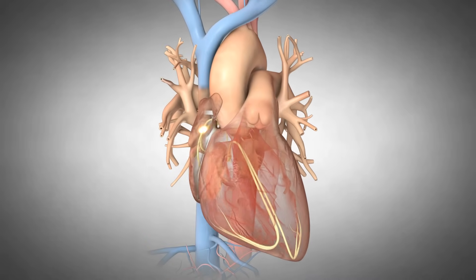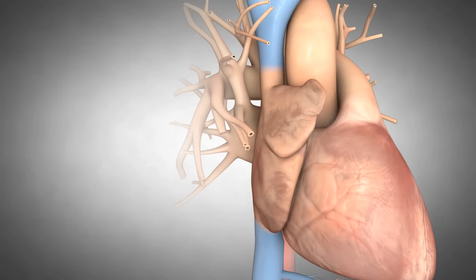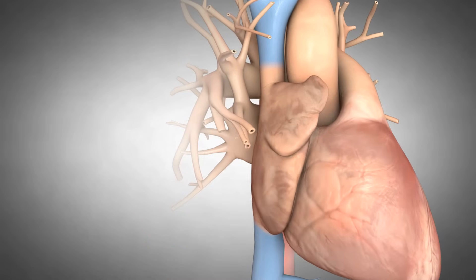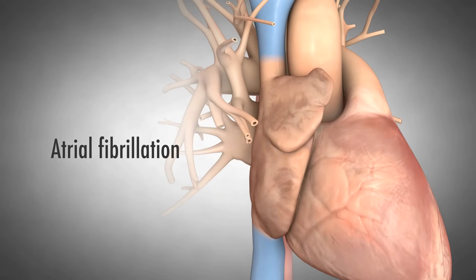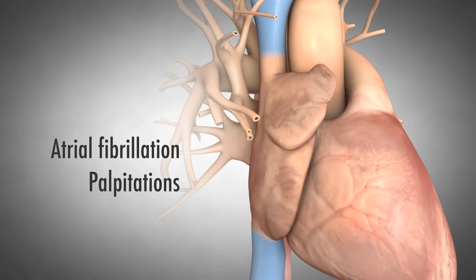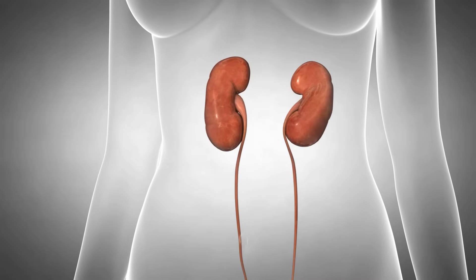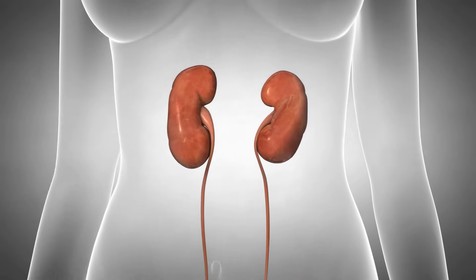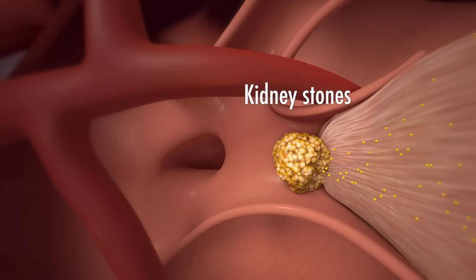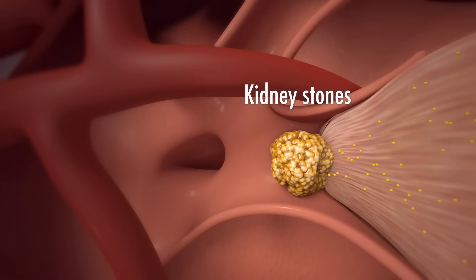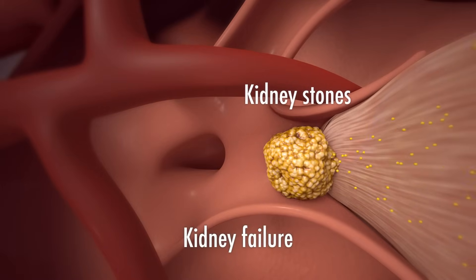The high calcium often affects the electrical system of the heart, causing atrial fibrillation, pain, and palpitations. The excess blood calcium also builds up in the kidneys, forming kidney stones and occasionally causing kidney failure.